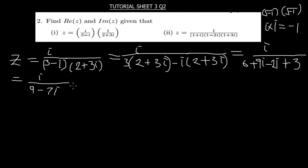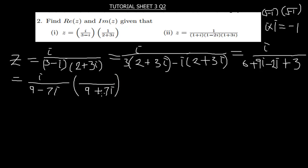So here we have reached the point where it is now ideal for us to use the principle of a conjugate. A conjugate — remember — is just the same expression with the sign changed. So my conjugate here will be 9 plus 7i. This same denominator is what you put there, and remember this is just the same as a special one — it's just 1, because when you divide this by itself you get 1, which is just the same as adding nothing.